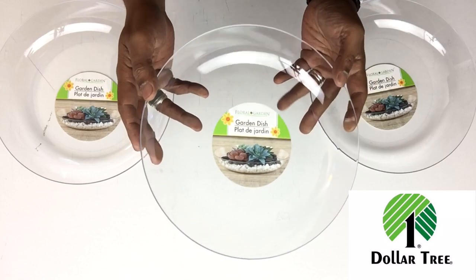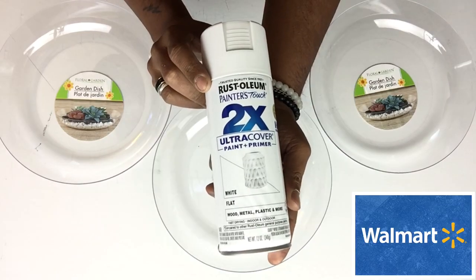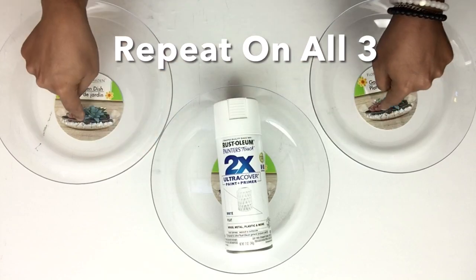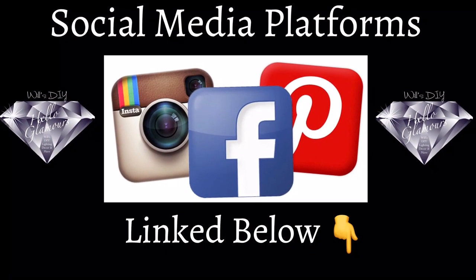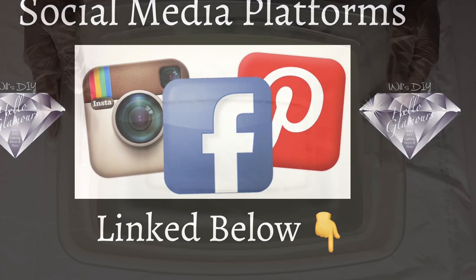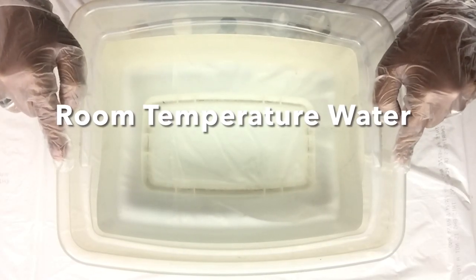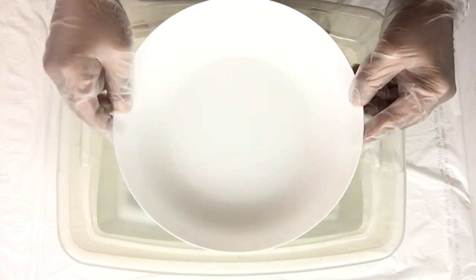To start off, I'll be making lampshades. I'll start by using three garden dishes and spray paint just the inside with white spray paint. Don't forget to follow me on my social media platforms linked below. Next, I'll be using a plastic storage bin filled up almost to the top with room temperature water, and I'll be using it to dip my garden dish.